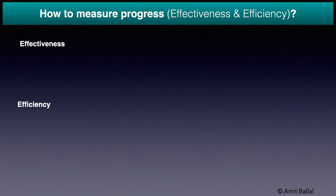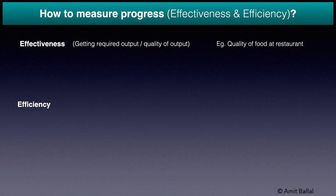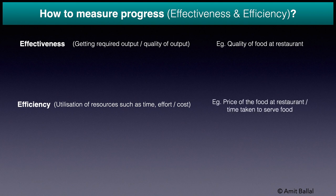You can review whether you are doing brainstorming sessions properly through two measures: effectiveness and efficiency. Effectiveness means getting the required output or the quality of output — for example, the quality of food at a restaurant. Efficiency means utilization of resources such as time, effort or cost — for example, the price of food or time taken to serve it.